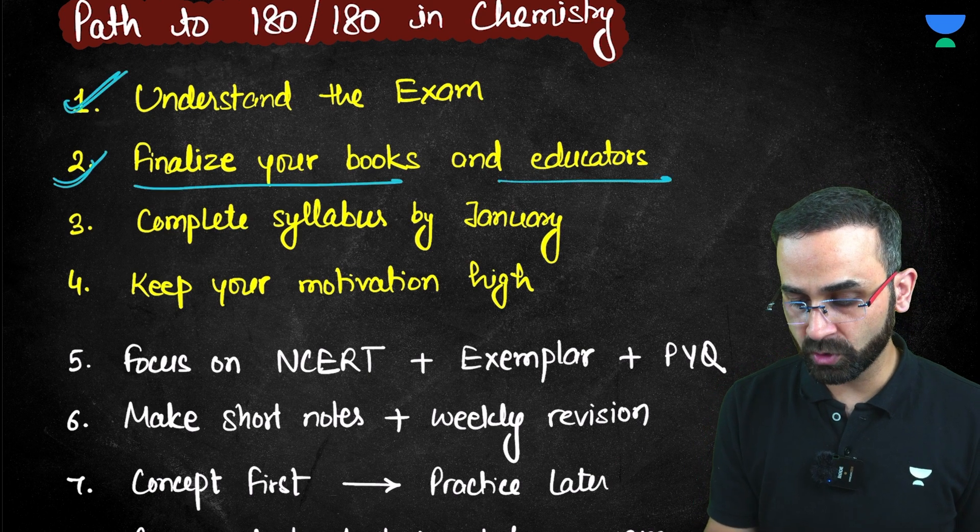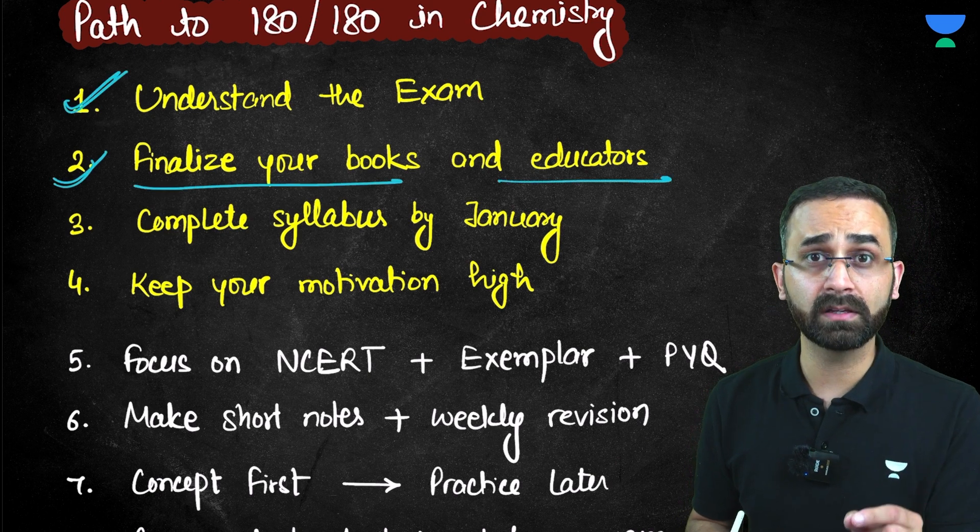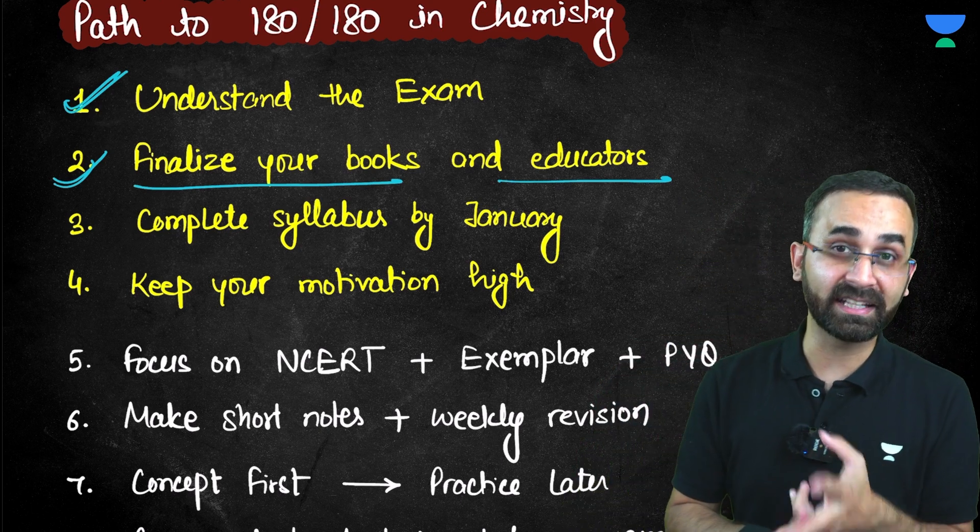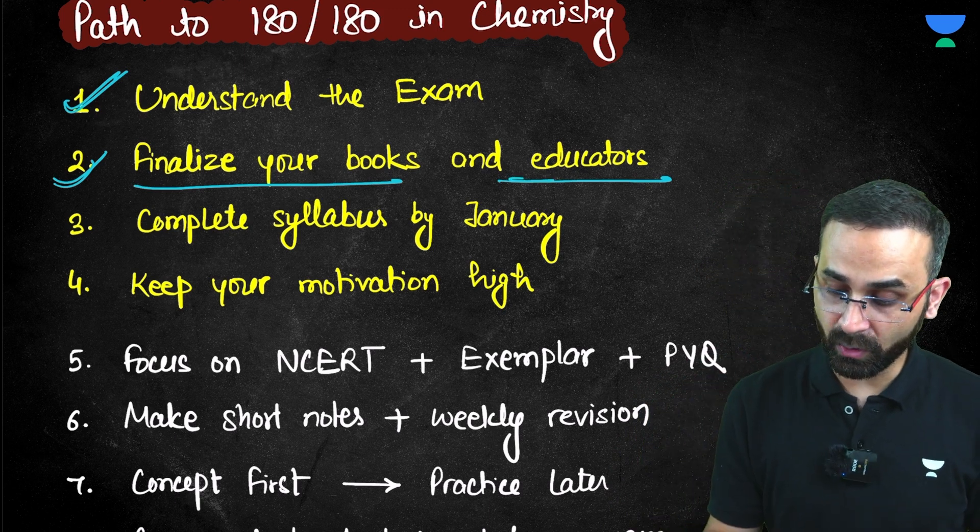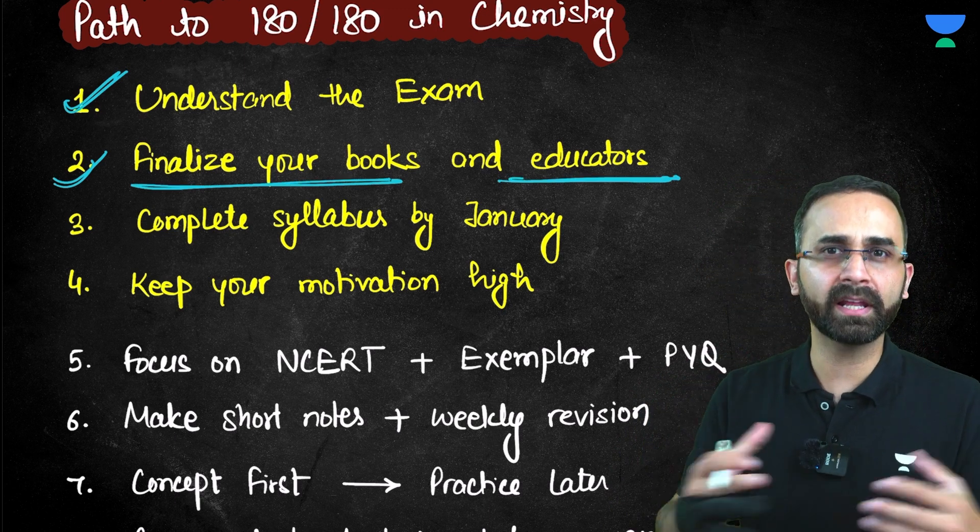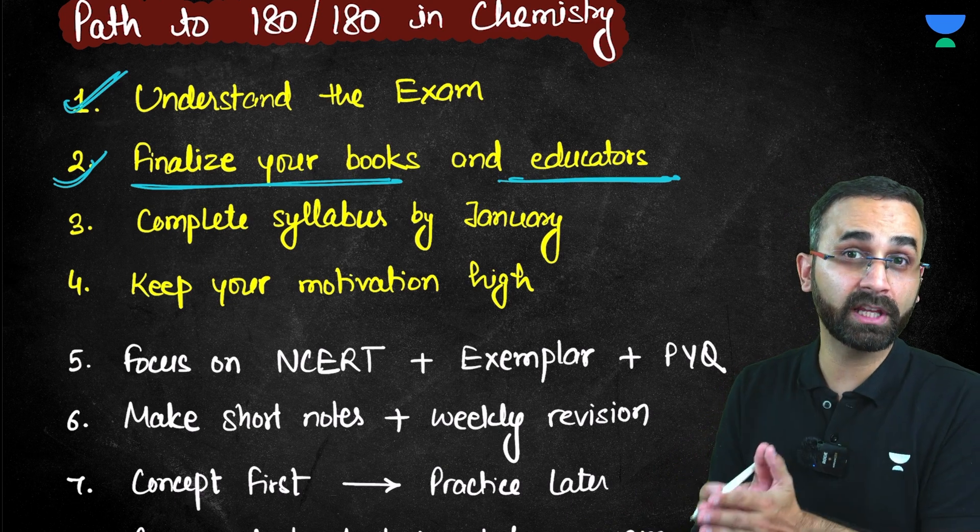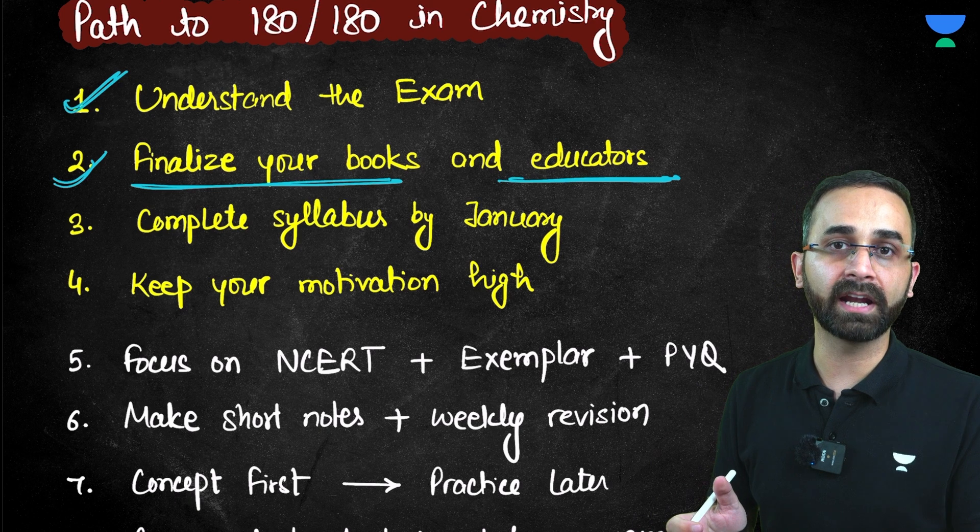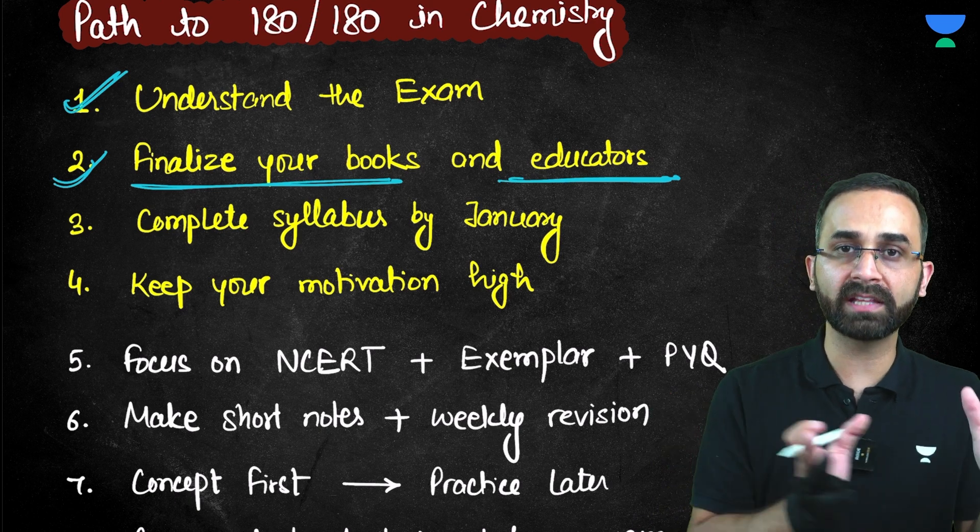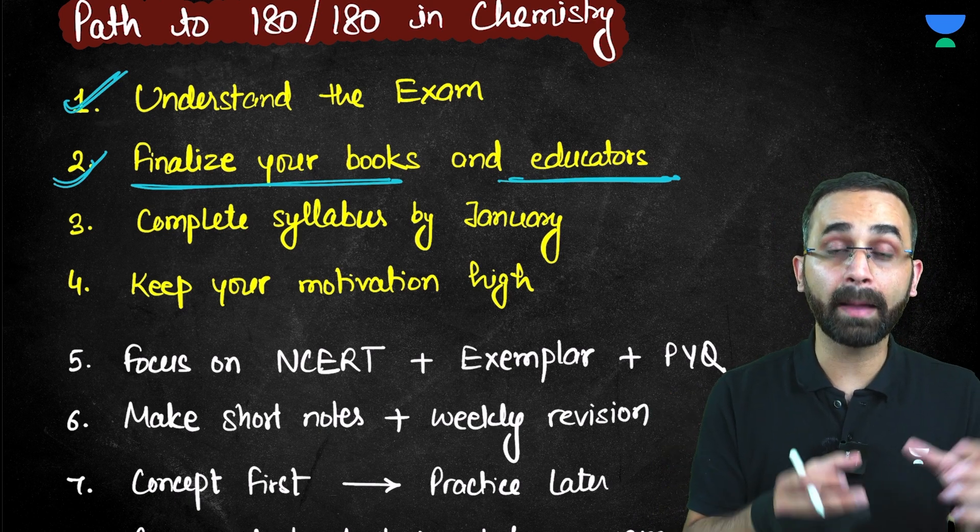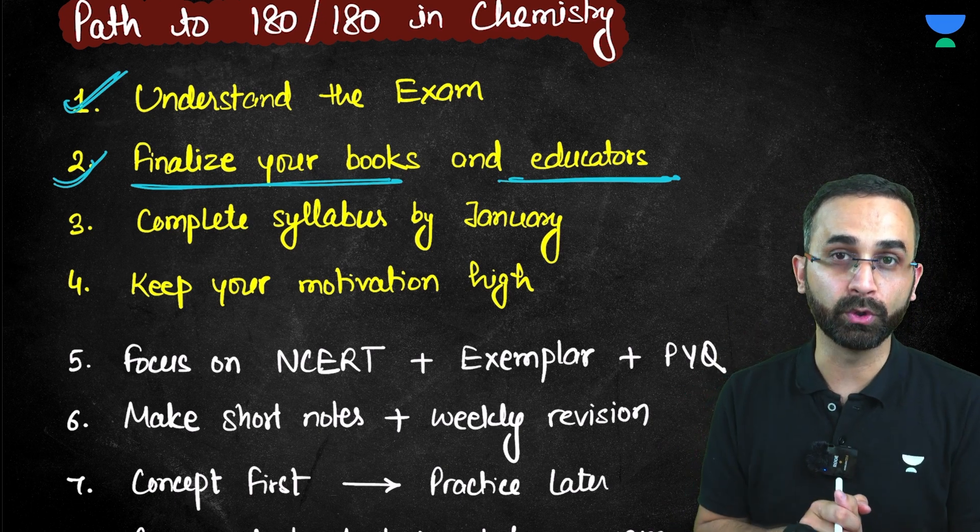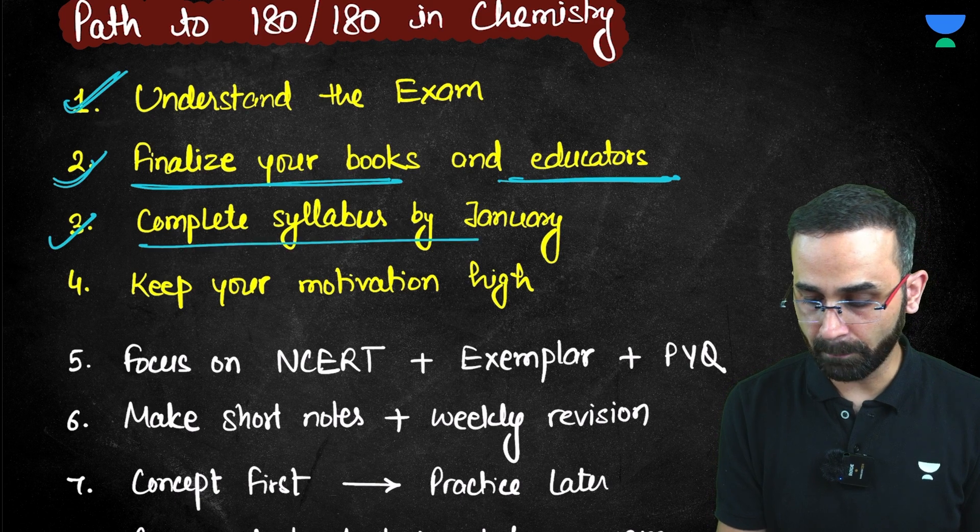Second point: finalize your books and educators. Only one book. That is in chemistry, you have to focus on the NCERT textbook, NCERT exemplar, the lab manual, and only one set of educators. Do not have so many references. If you have a good team of teachers teaching you, then your concepts will be cleared in the class and you only need to go through the NCERT so that the application, the problem practice and everything, the scope of that concept is clear to you. Now, complete the syllabus by January. So that is your target.